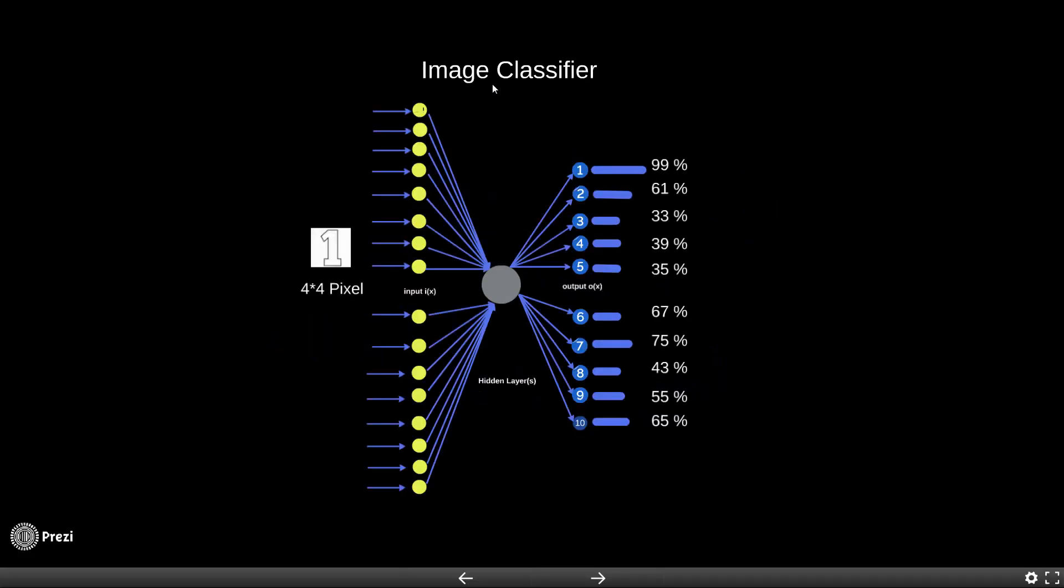What we have here is an image classifier in the form of a feed forward neural network. We have abstracted all the hidden layers and the neurons into one big neuron here. The input is an image of 4 by 4 pixels.